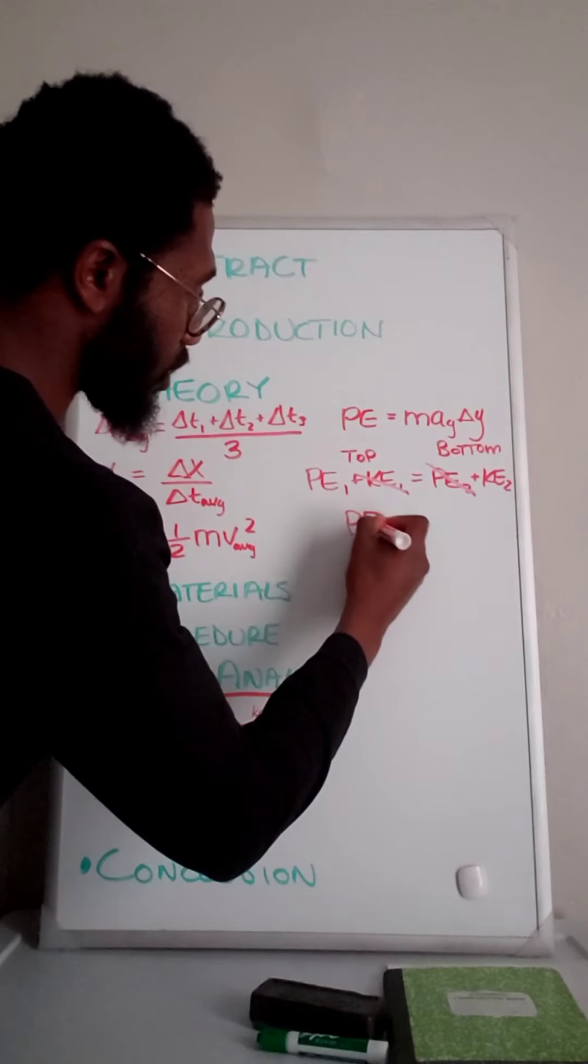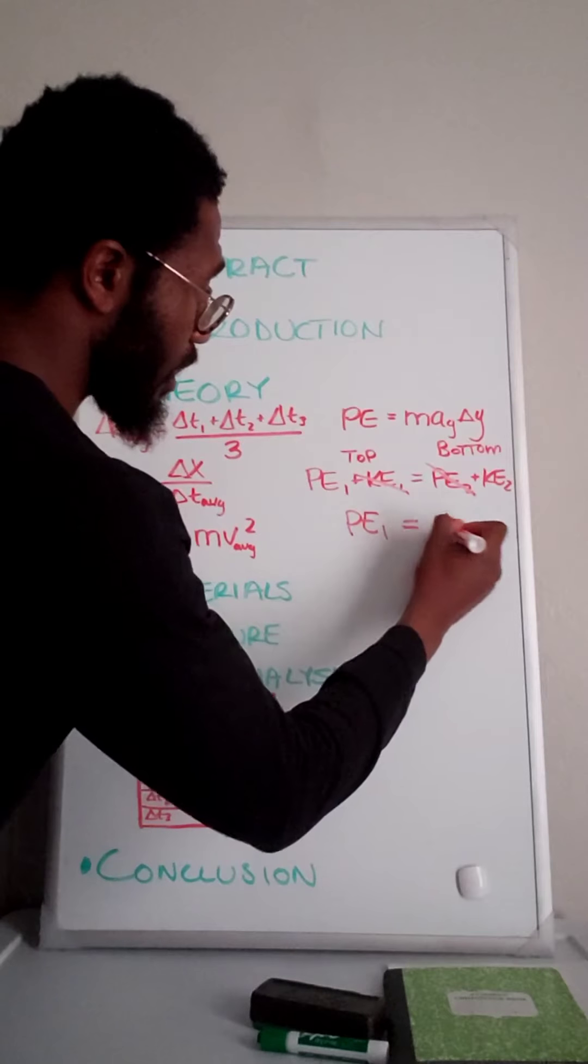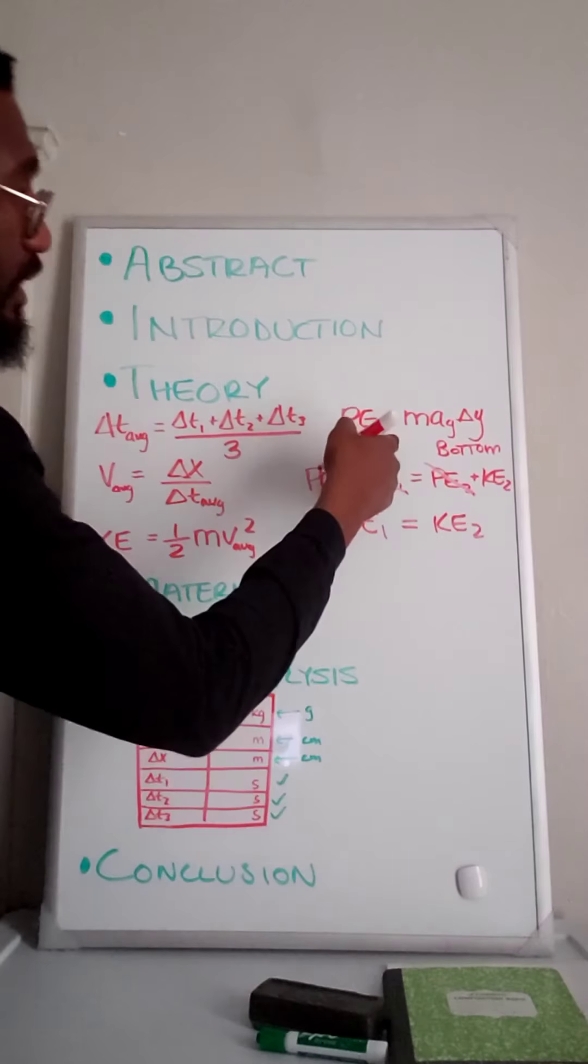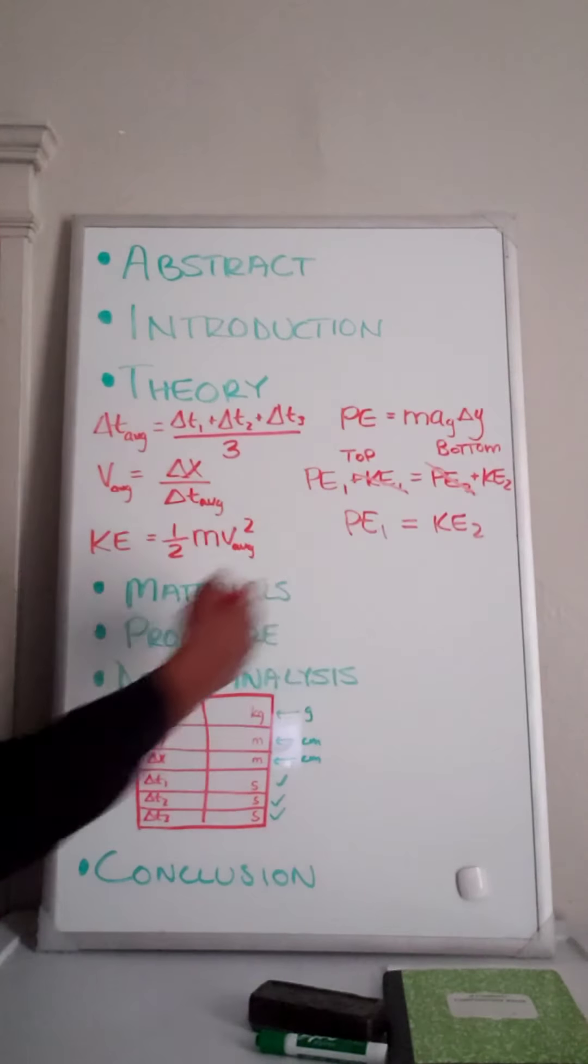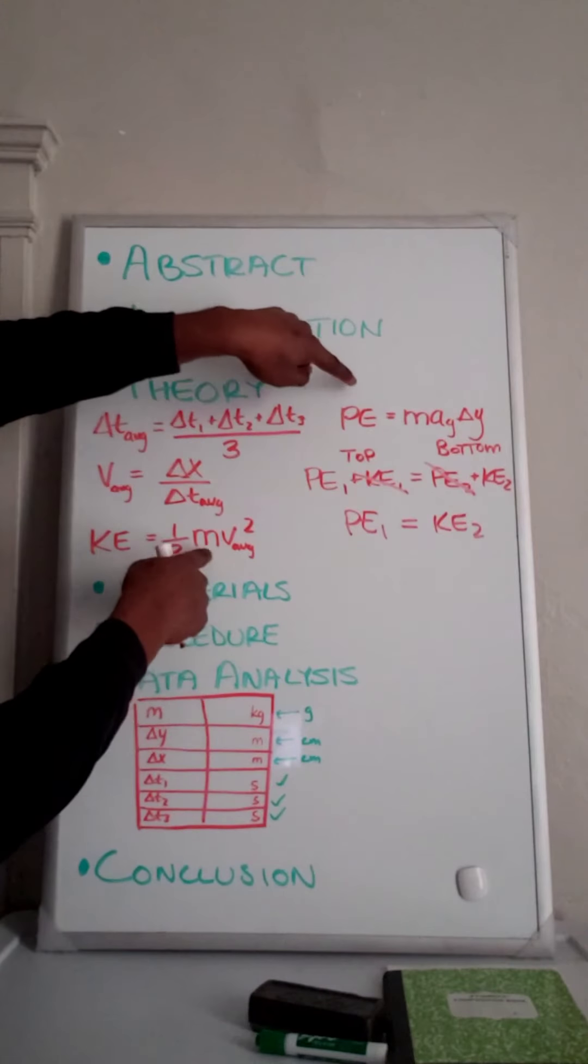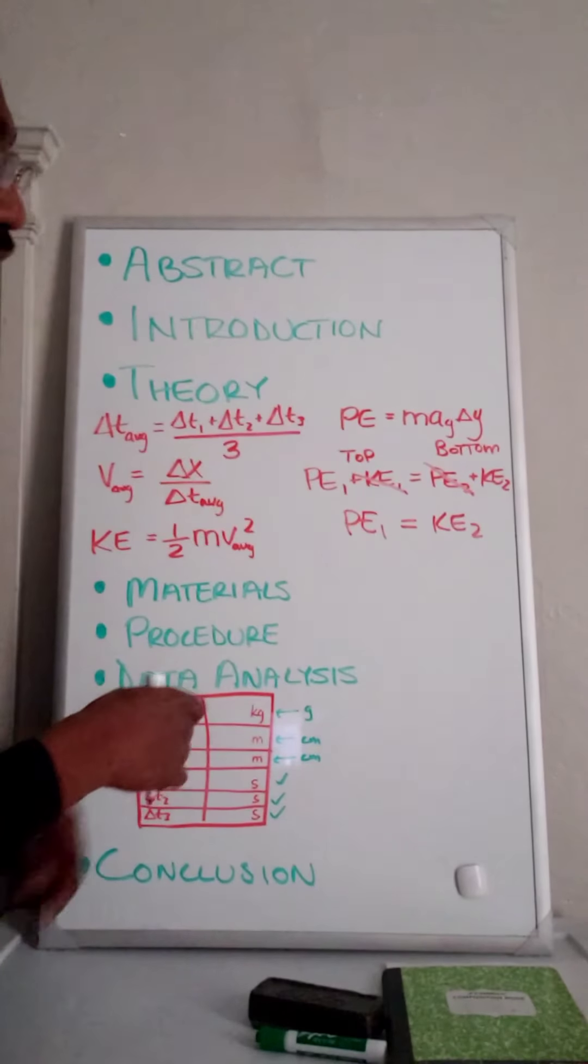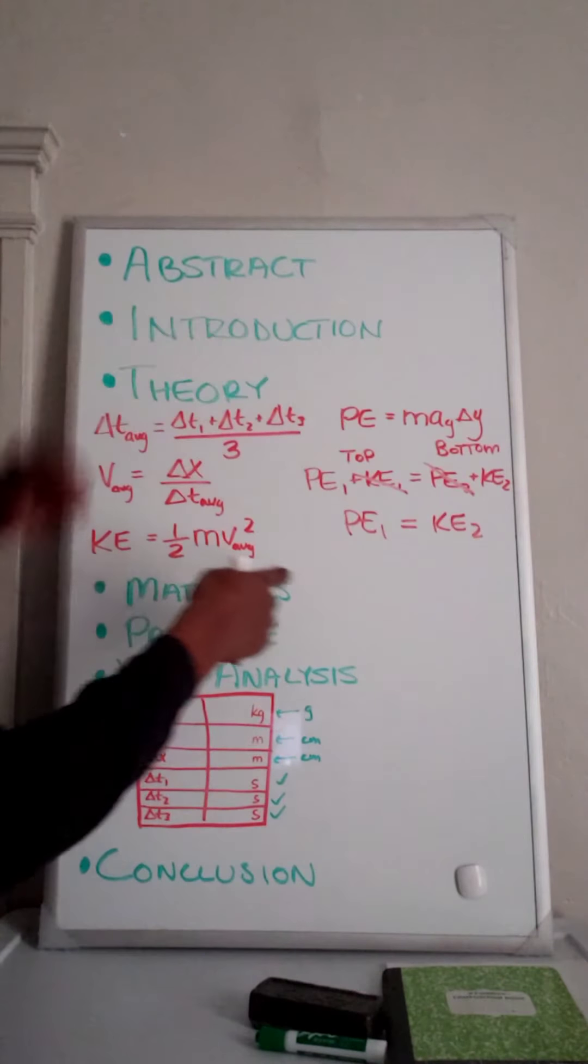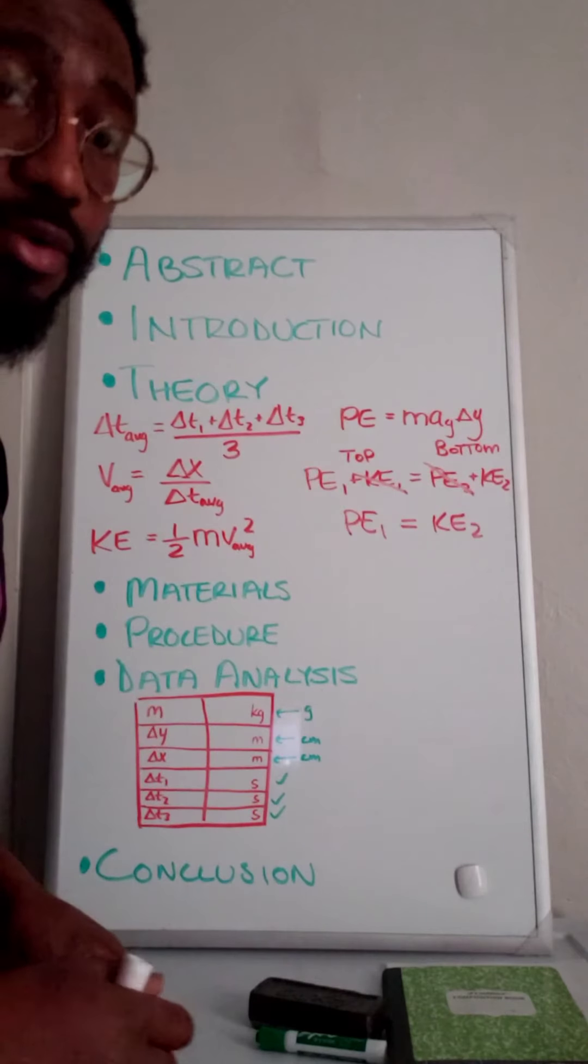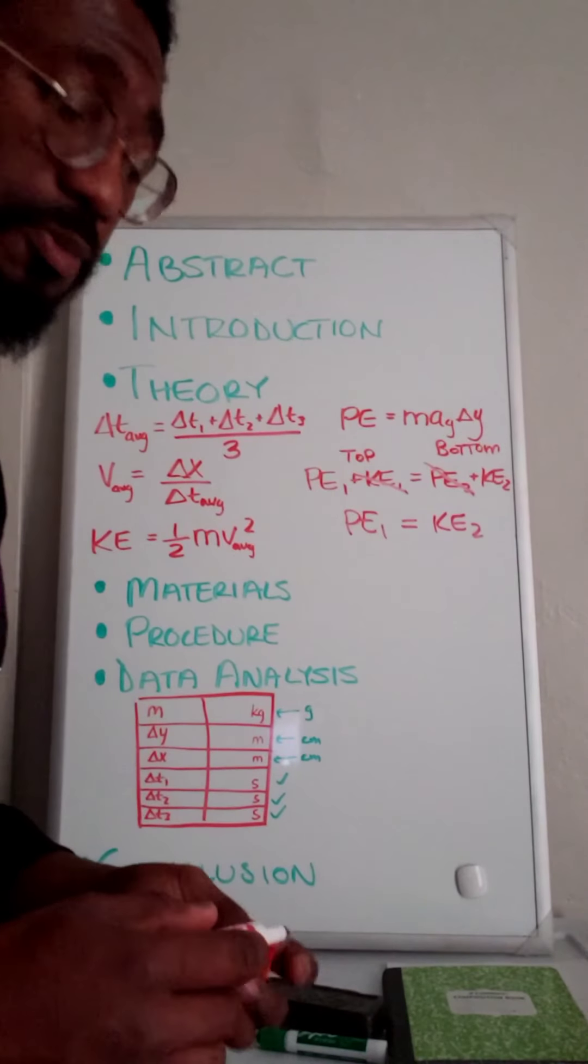Your conservation of energy equation is comparing the potential energy at the top of the ramp to the kinetic energy at the bottom of the ramp. If these two numbers are equal, then energy was conserved. If these two numbers are not equal, energy was not conserved. That's the goal of this experiment.